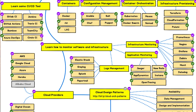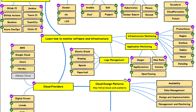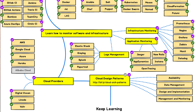For application monitoring, teams should learn how to implement AppDynamics, New Relic, Jaeger, Instana, and OpenTracing in their projects. For log management, a variety of tools can be used like Elastic Stack, Graylog, Splunk, and PaperTrail. Cloud computing plays a vital role in the DevOps roadmap today. Teams should build knowledge of managing applications on cloud platforms like AWS, Google Cloud, Azure, and Heroku, and should also be familiar with cloud design patterns like availability, data management, and design and implementation.